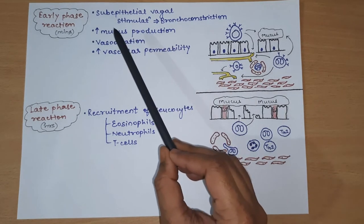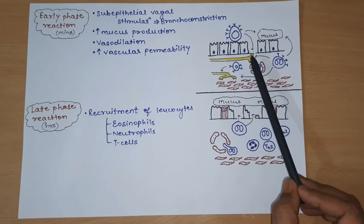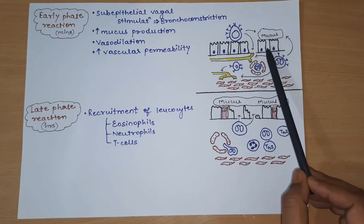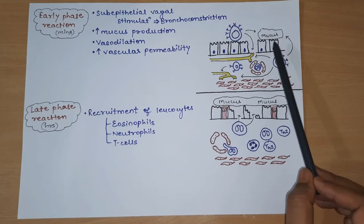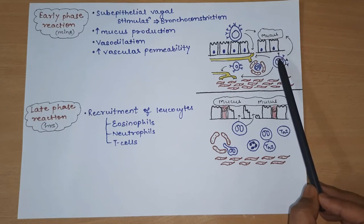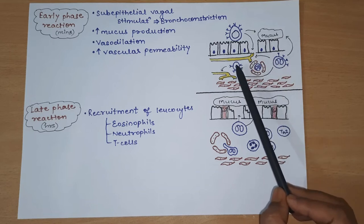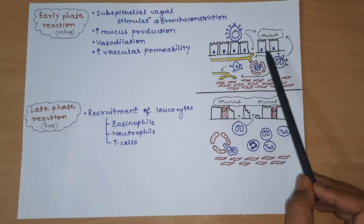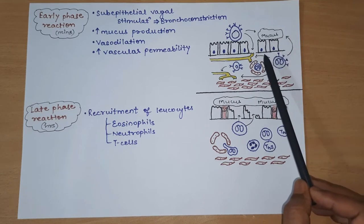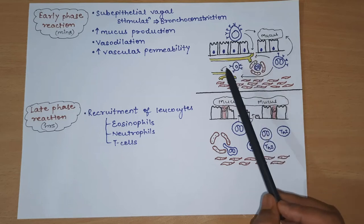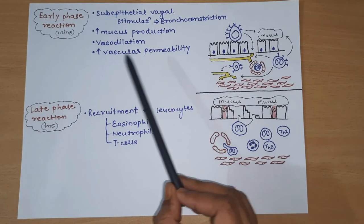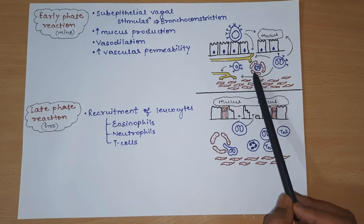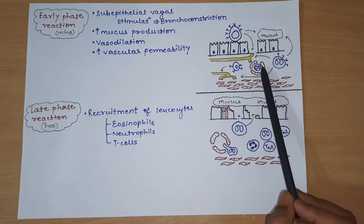Along with this, these mediators also increase mucous production - as seen here, goblet cells present in the epithelium, through these mediators from eosinophils and mast cells, have their mucous production increased. These same mediators also increase vasodilation and vascular permeability, as can be seen here.